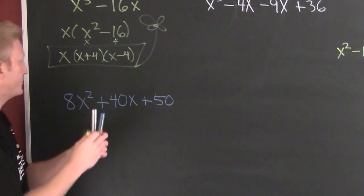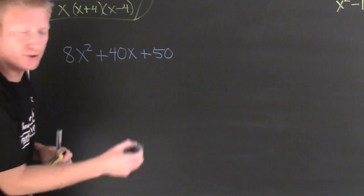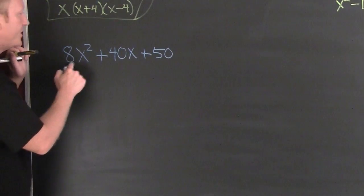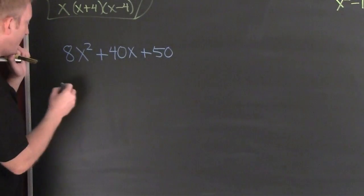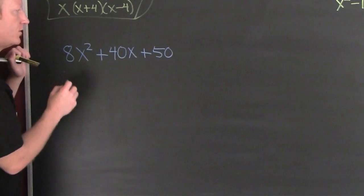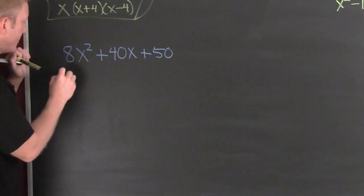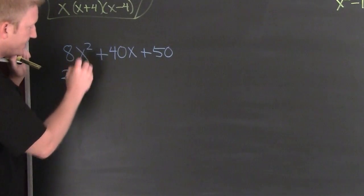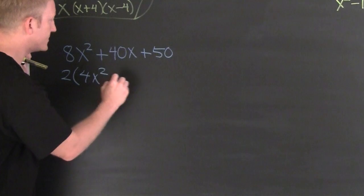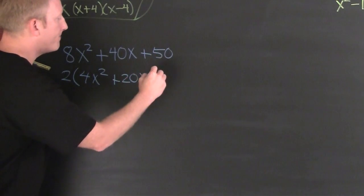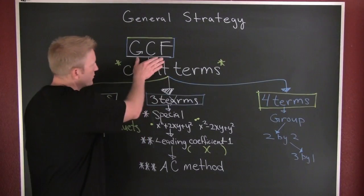Next example. First rule: take out a common factor. It appears to be... it's only 2. So pull the 2 out. Left on the inside I have 4x² + 20x + 25.